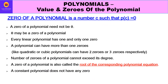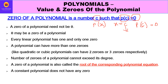Now let us learn key points related to the zero of a polynomial. The zero of a polynomial is a number c such that if we replace x by c, we get the value 0 — that is p(c) = 0. That c is known as the zero of the polynomial.